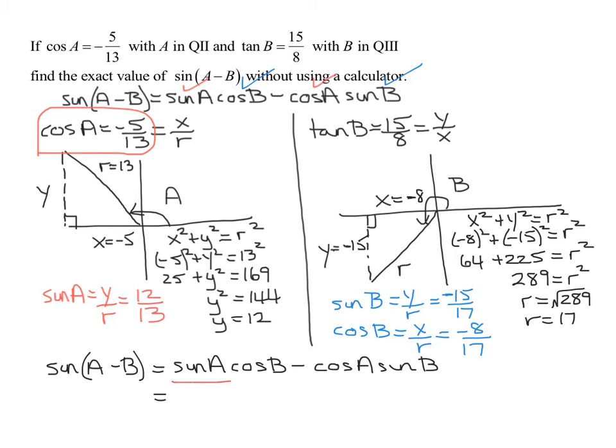What was the sine of A? Here's the sine of A. It is 12 over 13. Times the cosine of B. Negative 8 over 17. Minus what was the cosine of A? That's the one we were given. It was negative 5 over 13. Times the sine of B. What's the sine of B? The sine of B is negative 15 over 17.